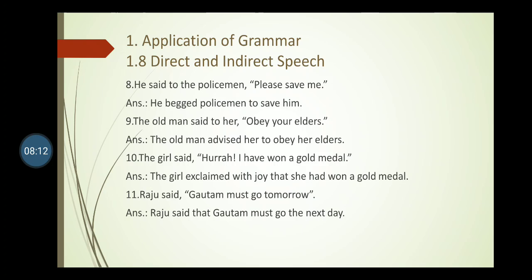Sentence ten: The girl said, 'Hurray! I have won a gold medal.' This is an exclamatory sentence. The reporting verb changes to 'exclaimed with joy'. The conjunction used is 'that'. 'I' changes to 'she', and 'have won' changes to 'had won'. Answer: The girl exclaimed with joy that she had won a gold medal.